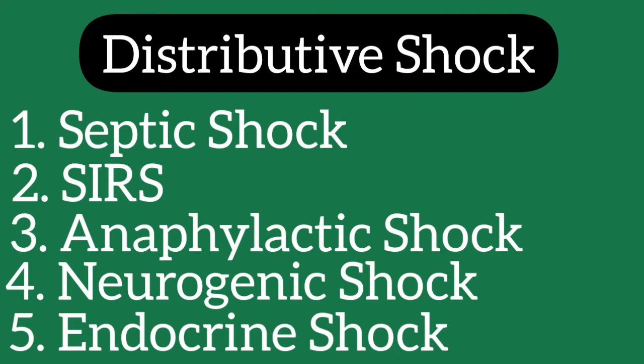Neurogenic shock can occur in the setting of trauma to the spinal cord or the brain. The underlying mechanism is the disruption of the autonomic pathway resulting in decreased vascular resistance and changes in vagal tone. Endocrine shock can also occur due to underlying endocrine etiologies such as adrenal failure as in Addisonian crisis and myxedema.